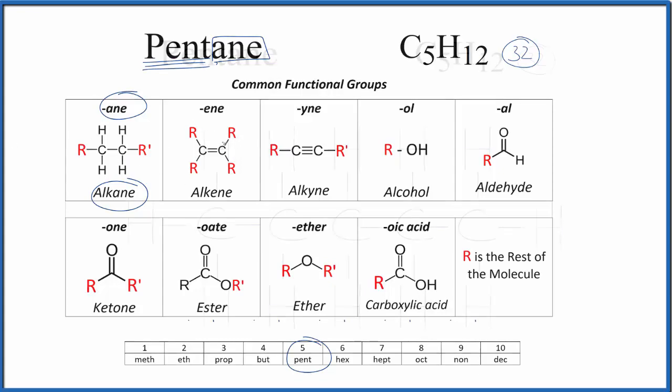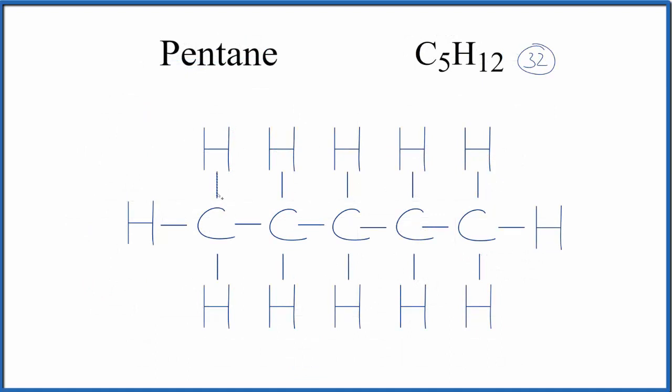That'll look like this. Each one of these lines here represents a pair of electrons, so we could replace this single bond with a pair of electrons. We could do that for all of the single bonds, but normally you see them written as just a line to represent a pair of electrons.